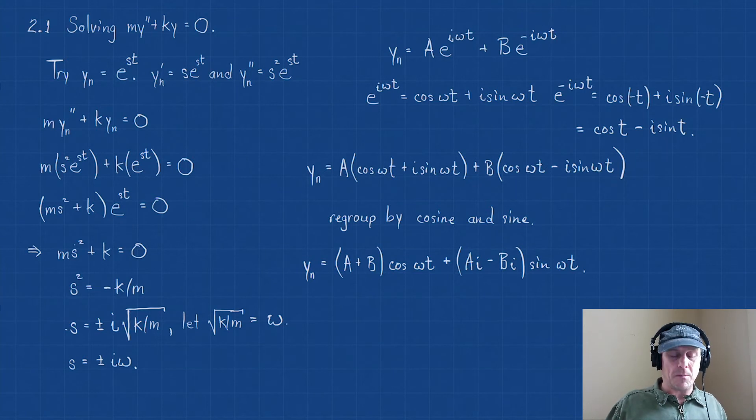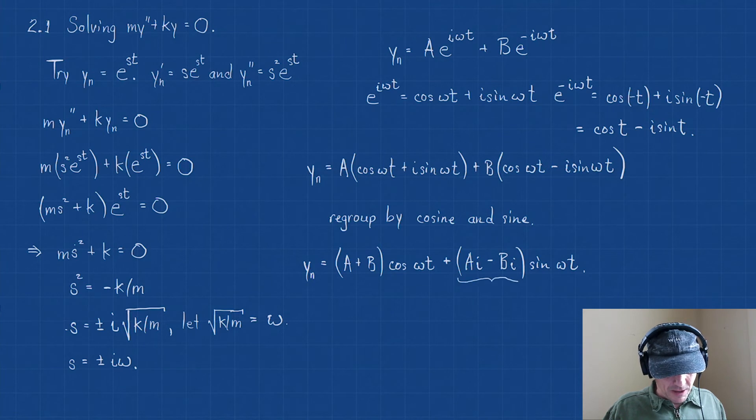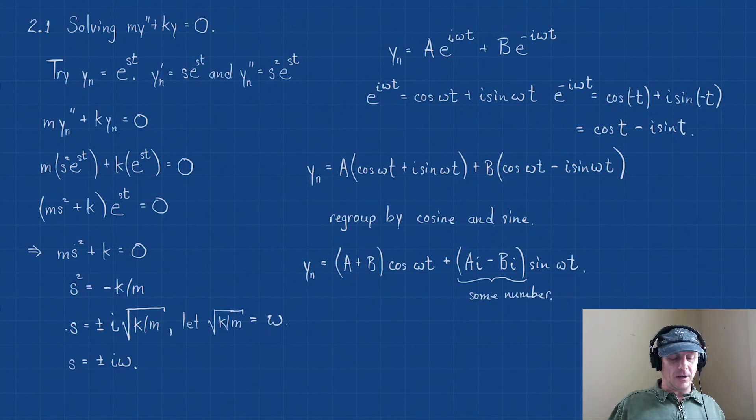Now this may seem really strange, because A + B, well that's just a number. But A·i - B·i, that has an imaginary component. But here's the difficult part, but this is a step we're going to take. A·i - B·i is just some number.